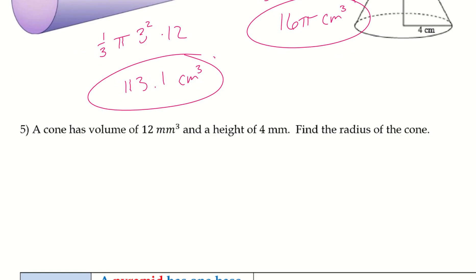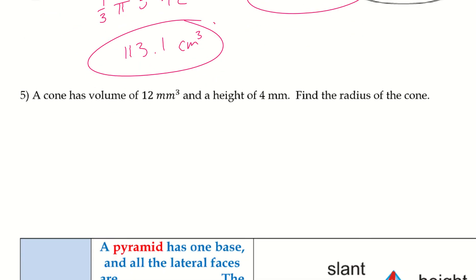All right, let's go ahead and take a look at number 5. So, a volume of a cone is 12 millimeters cubed and a height of 4 millimeters. Find the radius of the cone. So, the volume of a cone is one-third pi r squared times h. So, let's plug in that information we know.